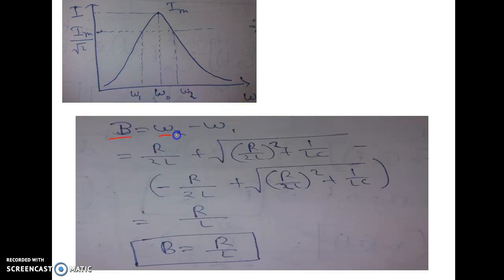B that is bandwidth equal to omega 2 minus omega 1. Now put the mathematical expressions of omega 2 and omega 1 and we will get that is equal to r by 2L plus root over of r by 2L square plus 1 by LC minus minus of minus r by 2L plus root over of r by 2L square plus 1 by LC. Because of this minus sign, this plus will become minus and this and this will get cancelled and because of this minus sign and this minus sign, minus minus becomes plus.